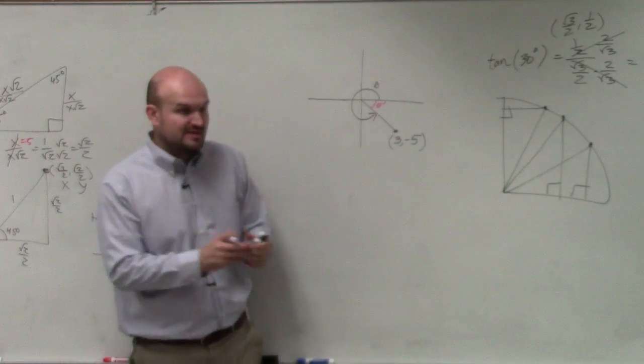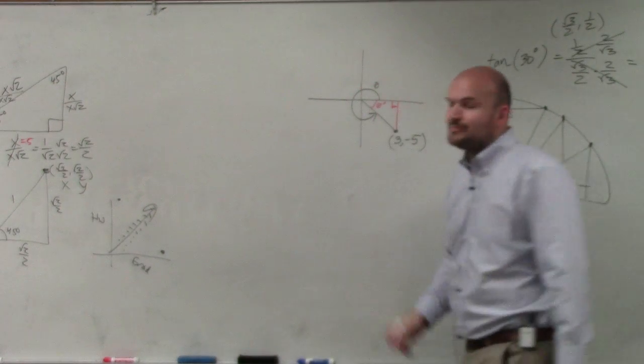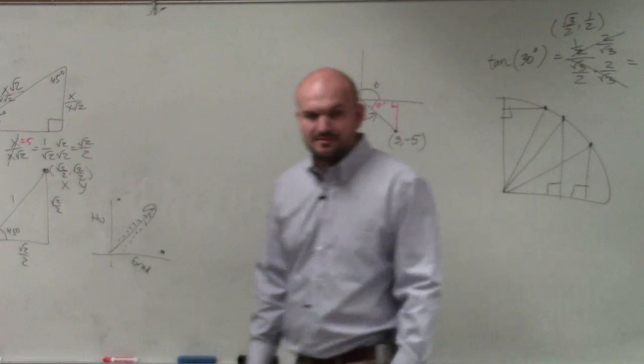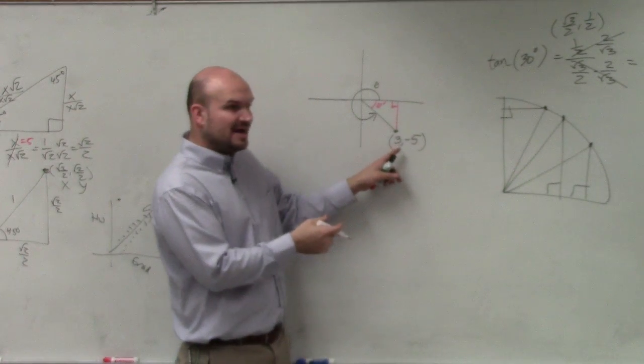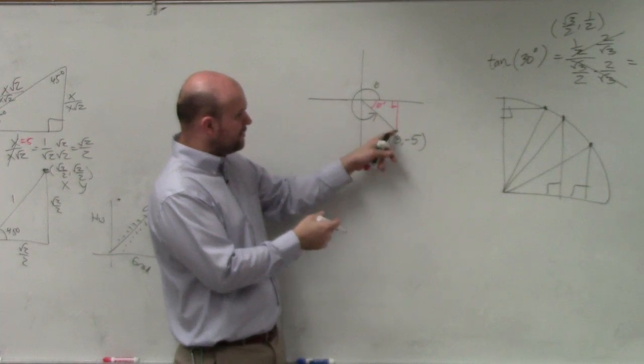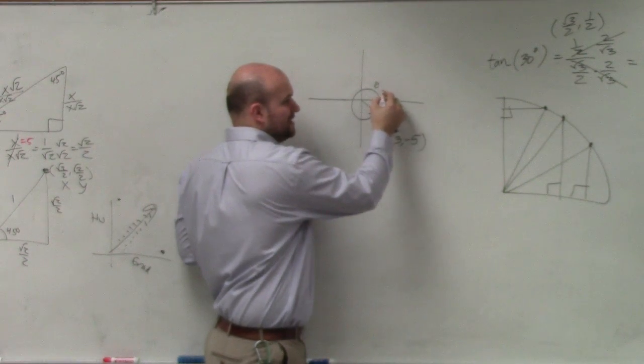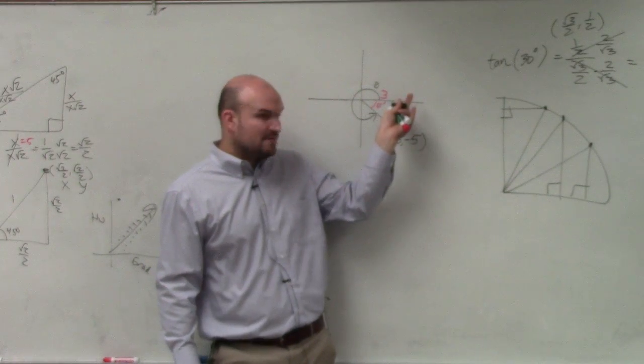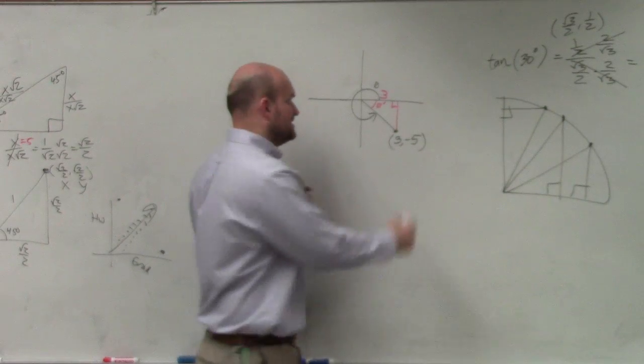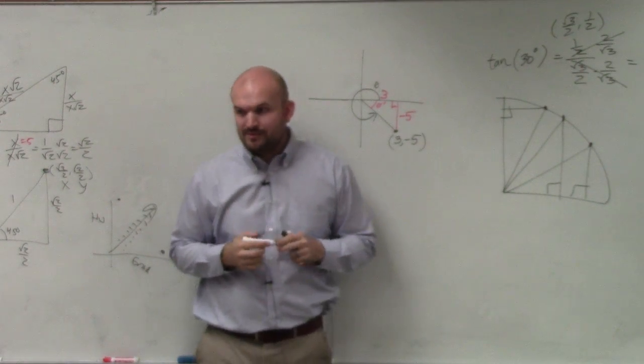So if I want to create a right triangle here, all I'm simply going to do is draw a perpendicular line to the x-axis. Now I have a coordinate point. x is my 3. That means to go over to that point, I traveled 3 units to the right. So does it make sense for me to label that side length of the triangle as 3? And to get to this point, I traveled 5 units down. So it makes sense for me to make this negative 5.